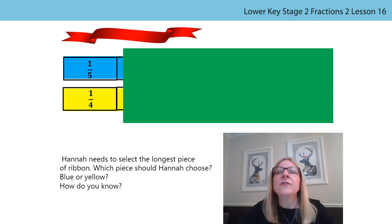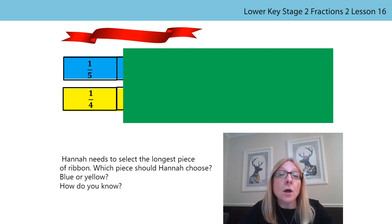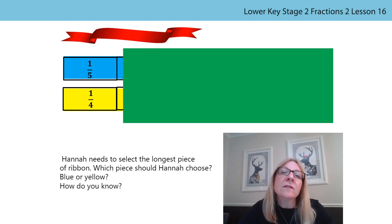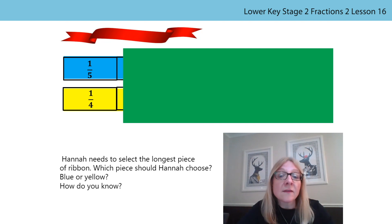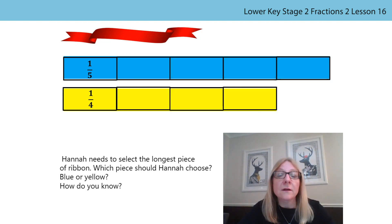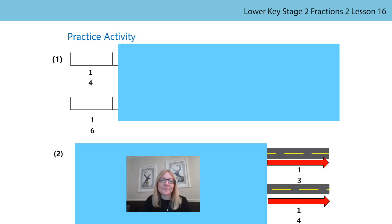Are you back? Let's see if you were right. We could see one fifth of the blue ribbon. We know that if one fifth is a part, then the whole is five times as much — take five parts and put them together to make one whole. We could see one quarter of the yellow ribbon. We know that if one quarter is a part, then the whole is four times as much — take four parts and put them together to make one whole. Did your ribbons look like this? Well done!